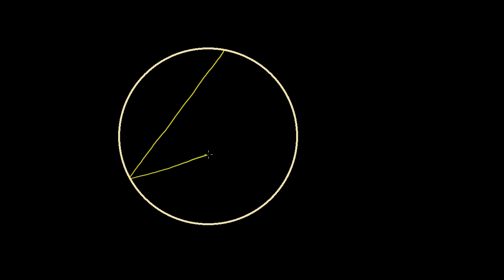What I want to do in this video is to prove one of the more useful results in geometry: that an inscribed angle — an angle whose vertex sits on the circumference of the circle — is going to be exactly one half of the central angle that subtends the same arc. I just used a lot of fancy words, but I think you'll get what I'm saying.